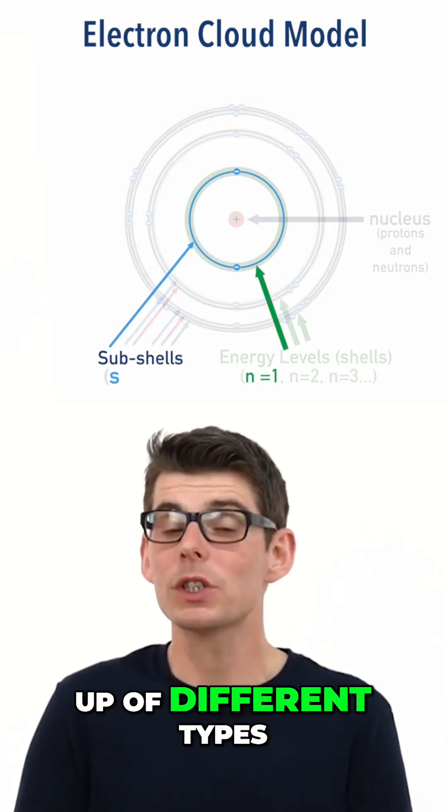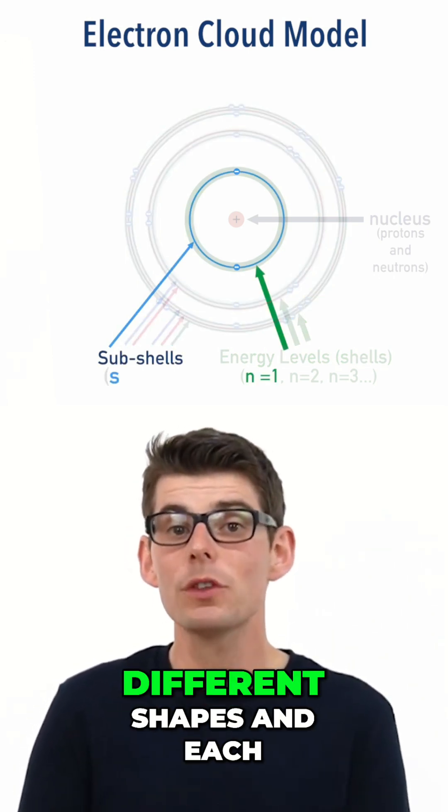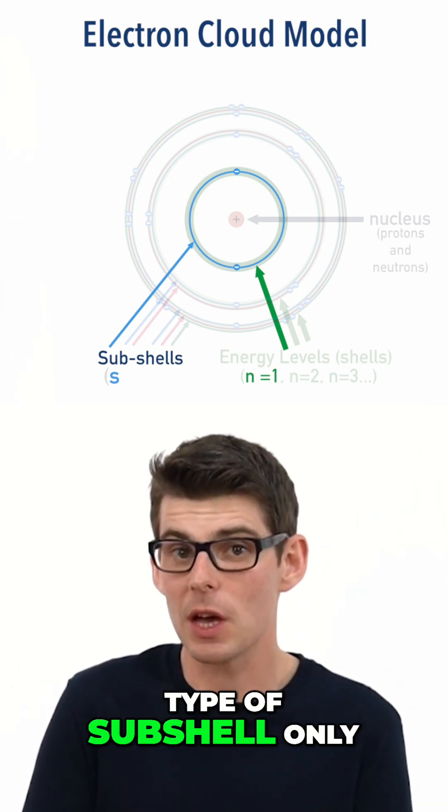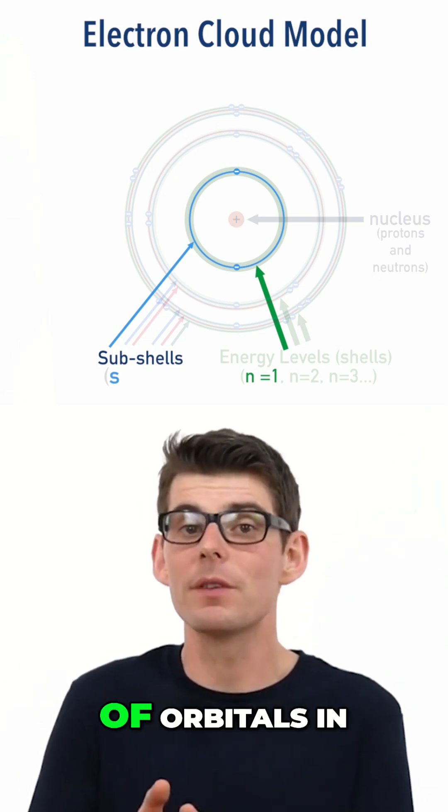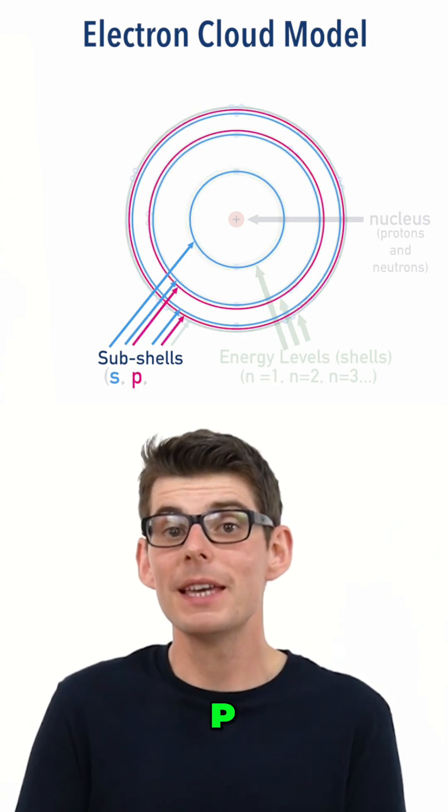Different subshells are made up of different types of orbitals that have different shapes and each type of subshell only has a certain number of orbitals in. There are S, P, D and F subshells.